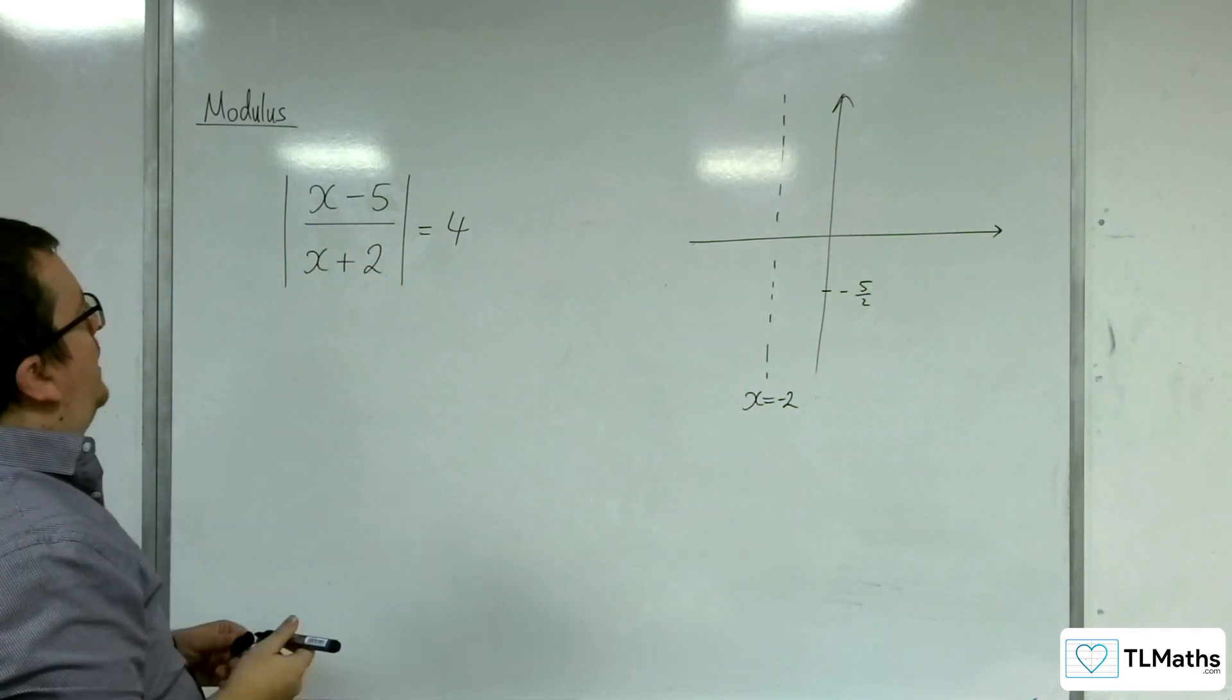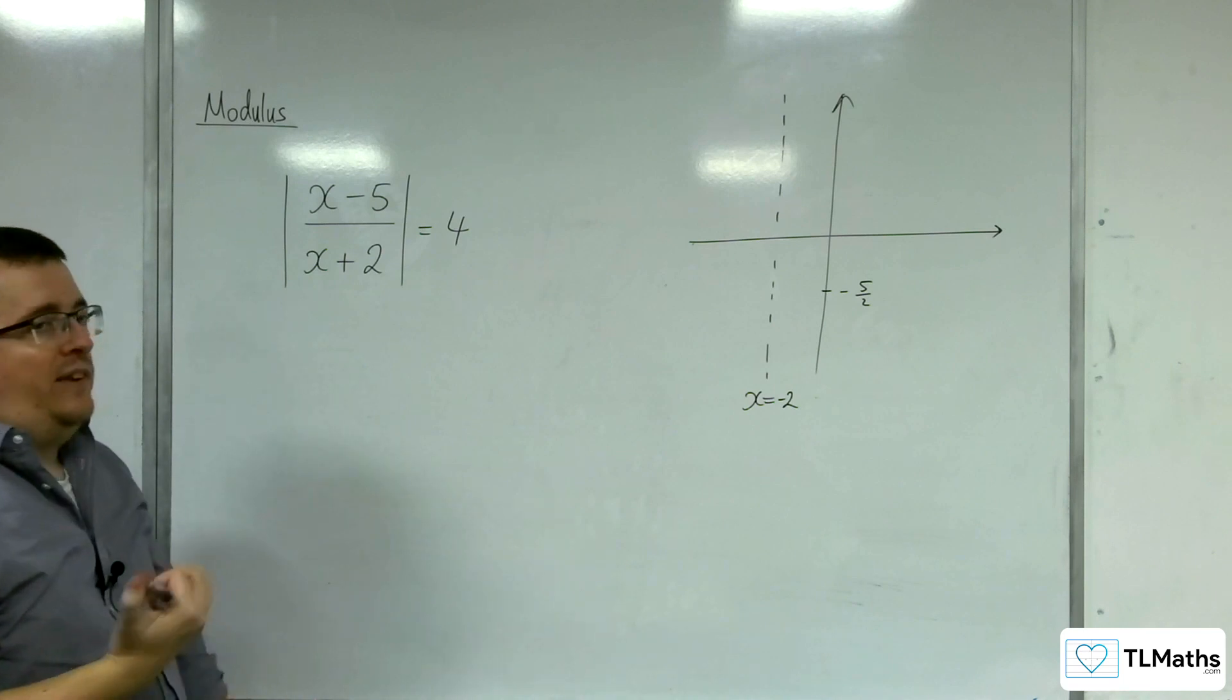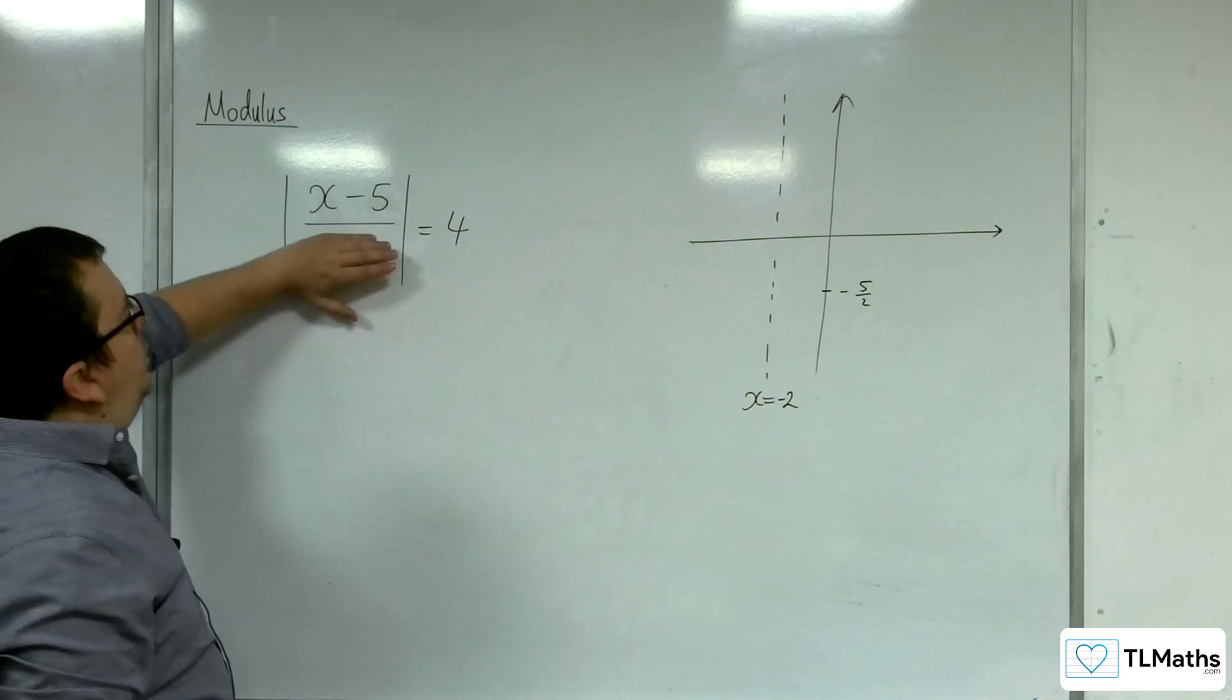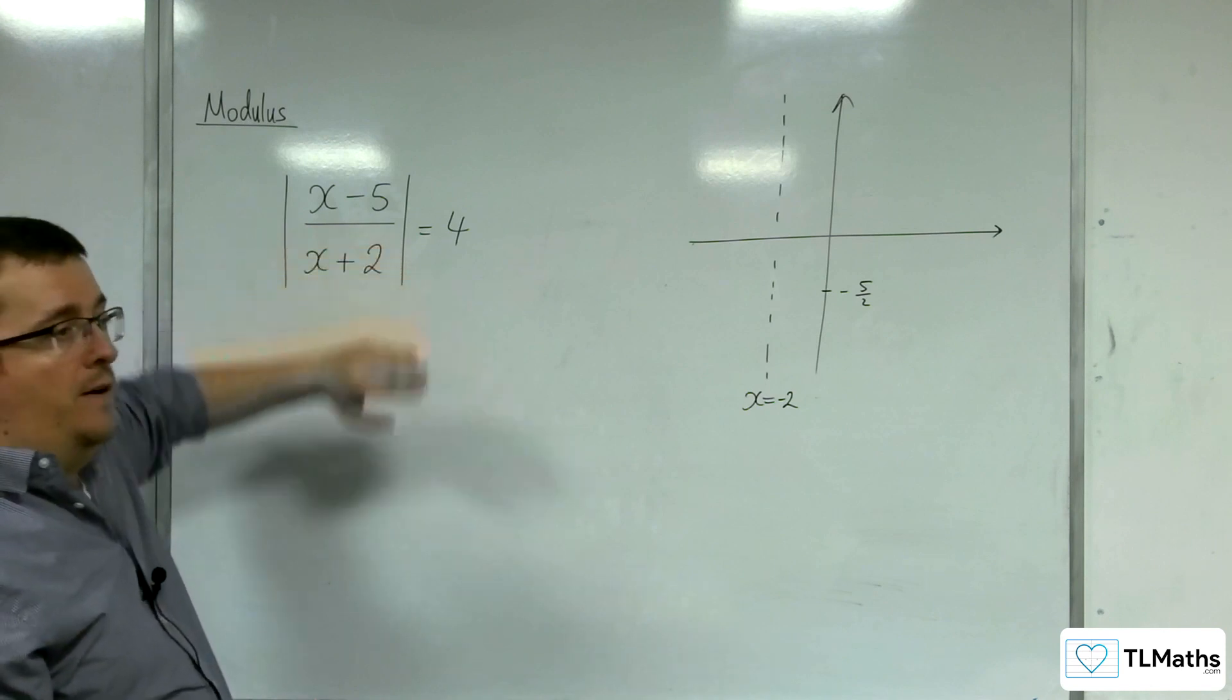Now, where is it crossing the x-axis? Well, it crosses the x-axis when y is 0, which is when the numerator is 0, so that would be at x equals 5.